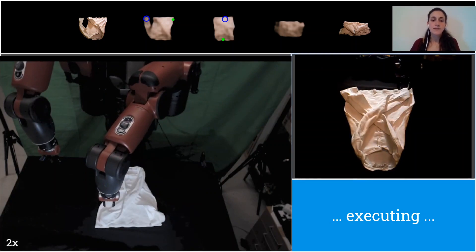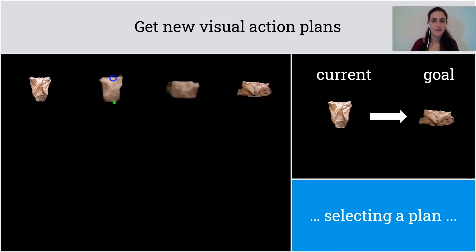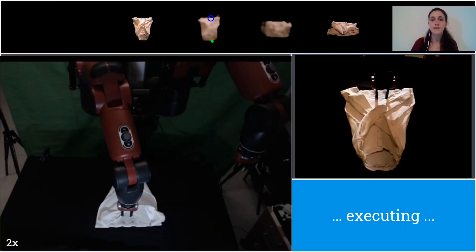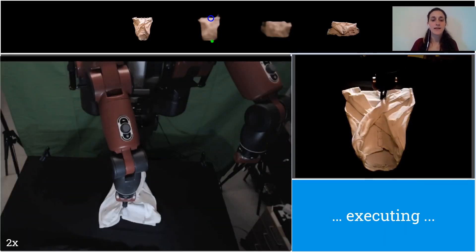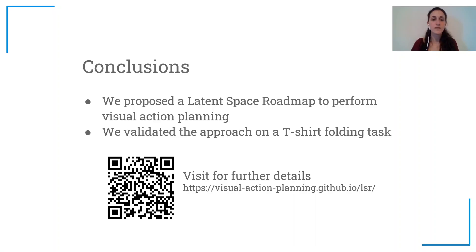So at this point, we are ready to execute the last replanning step. So we get the last visual action plan, we select the one to execute, and we finally execute the last action that leads to the final configuration.